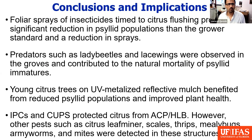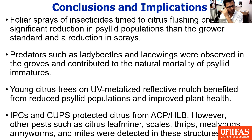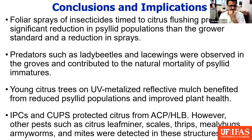We were also finding parasitoids of citrus leafminer, mealybugs, and Florida red scale inside the CUPS, causing some level of mortality. Overall, looking at what I've presented: foliar sprays of insecticides timed to citrus flushing provided significant reductions in psyllid populations compared to the grower standard, and also a reduction in the number of sprays needed.